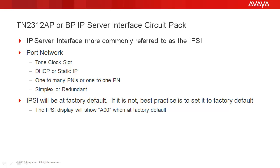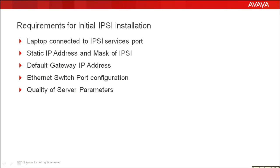IPSEEs will be at factory default on initial installation. If not, the best practice is to set it to factory default. When it's at factory default, the IPSEE display will say A00. What we will need for the initial IPSEE installation: your laptop connected to the IPSEE services port via crossover cable, the static IP address and mask for the IPSEE port, the default gateway's IP address, the Ethernet switch port configuration for the LAN connection, and the quality of service parameters — the 802.1p and DSCP diff-serve values.